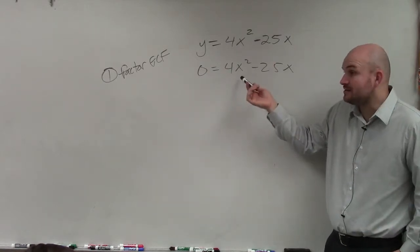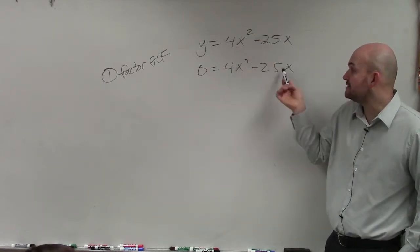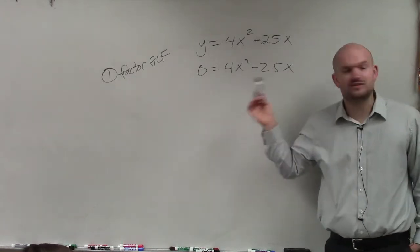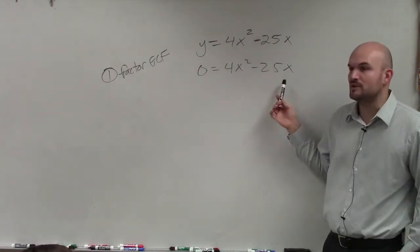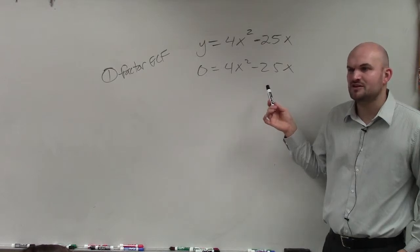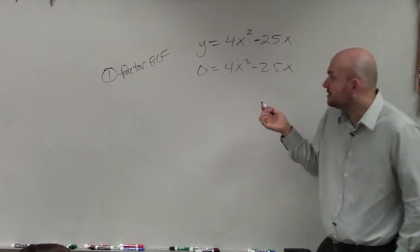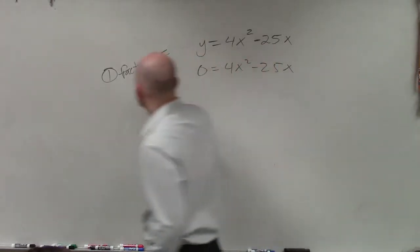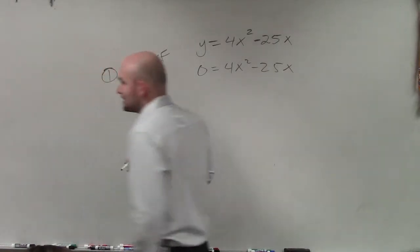They share an x, right? This has an x squared, and this has an x. So I can divide an x. Is there a number that divides into 4 and 25? Do they have to share any factors with numbers? No. So we can't factor any numbers. So your GCF is equal to x.